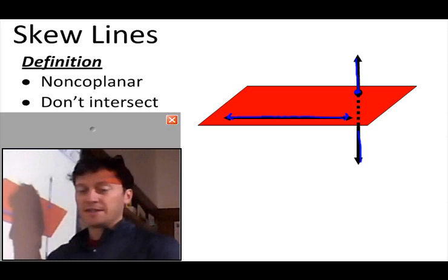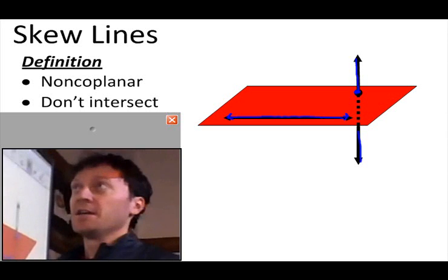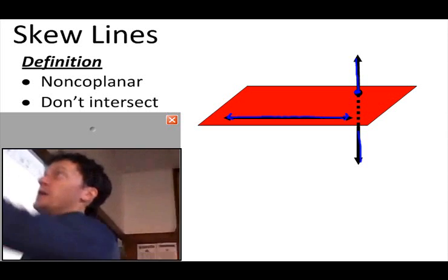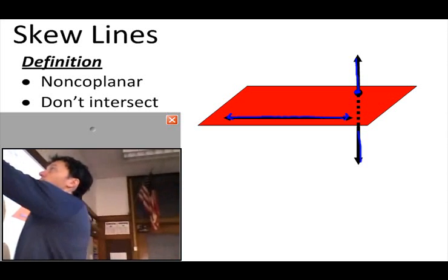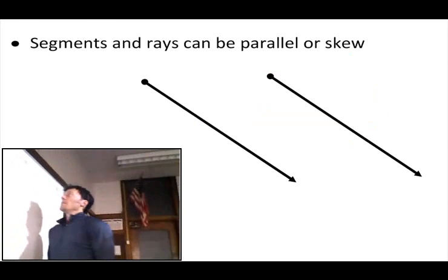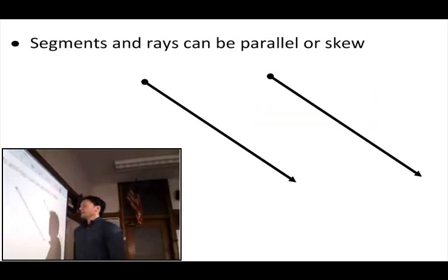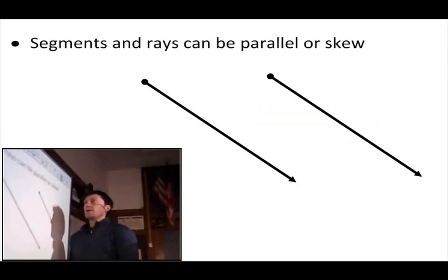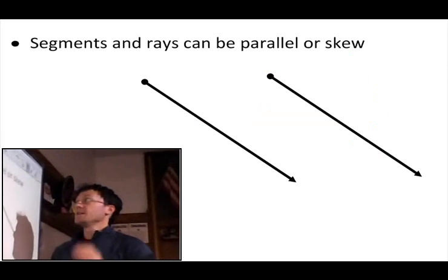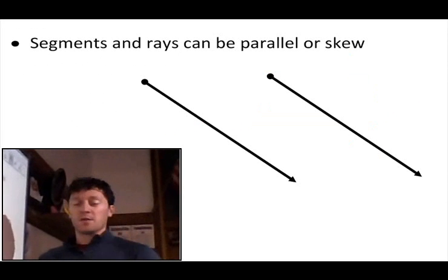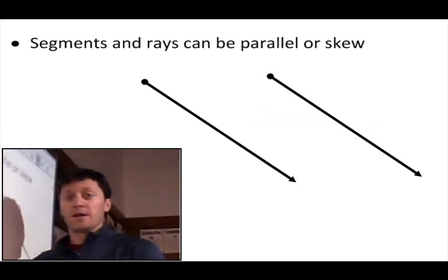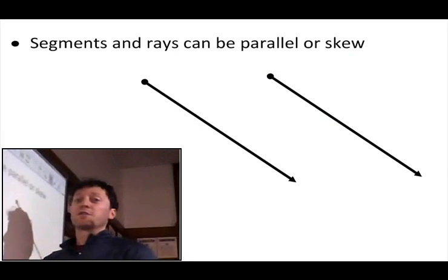So there are two ways for lines to not intersect: they can be parallel or skew. And as a note, segments and rays can also be parallel or skew.